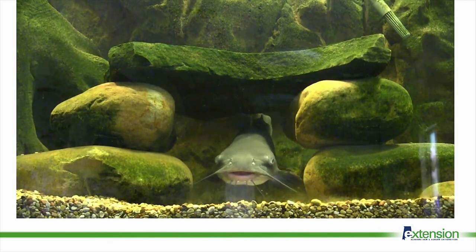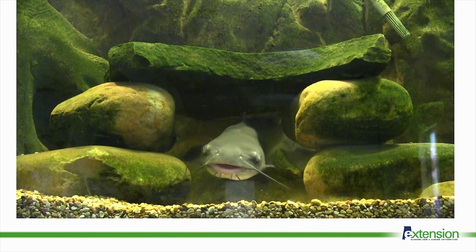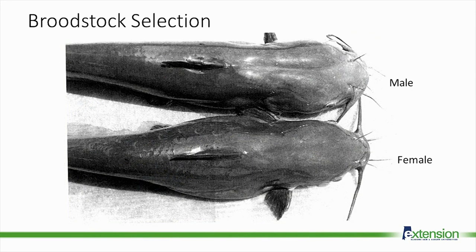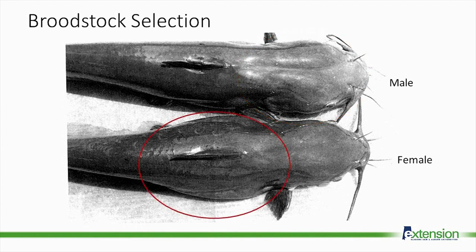Let's use the channel catfish as an example to illustrate some of these steps. One of the keys to successful aquaculture production is the selection of good broodstock. These fish are selected based on traits considered most valuable to the species. These are prime examples of catfish broodstock, showing strong secondary sex characteristics. The male has desired raised muscle pads on the top of his head, and the female has a rounded belly full of eggs.